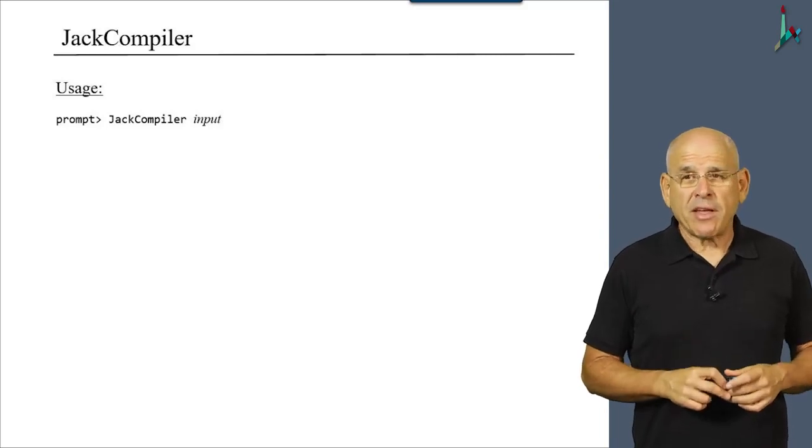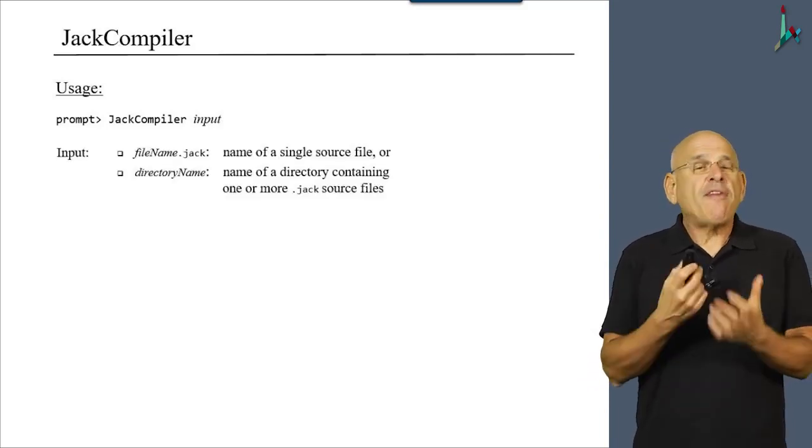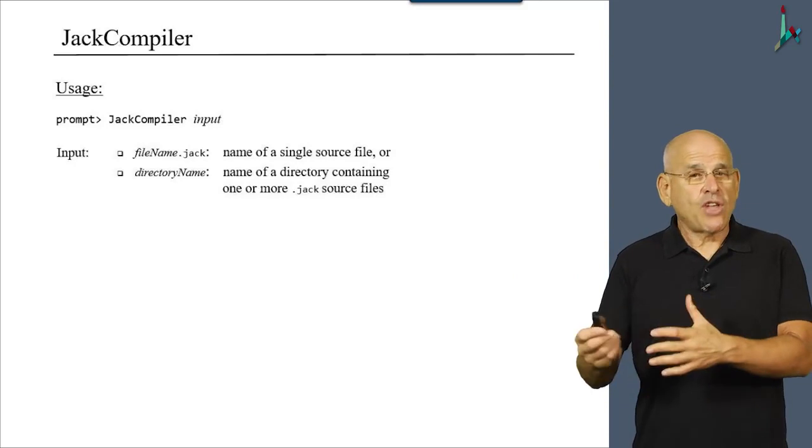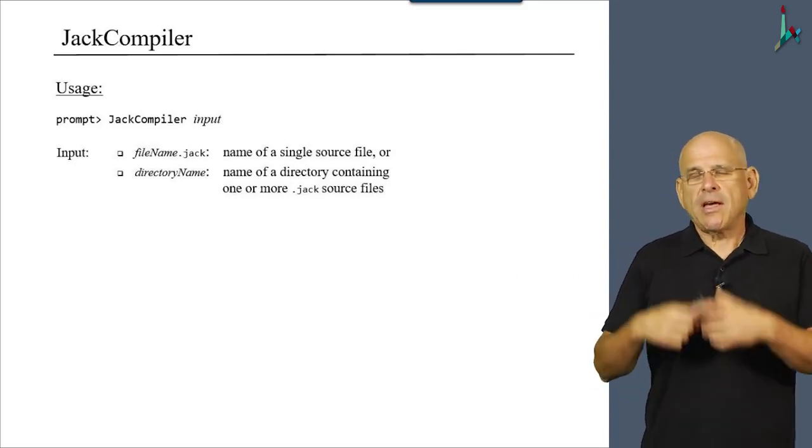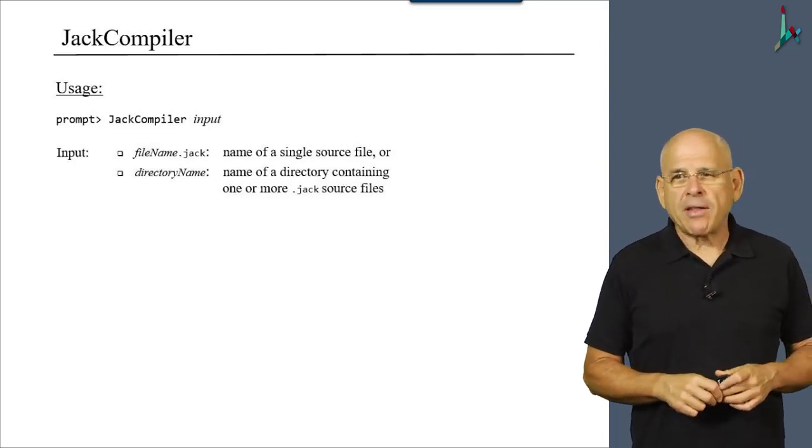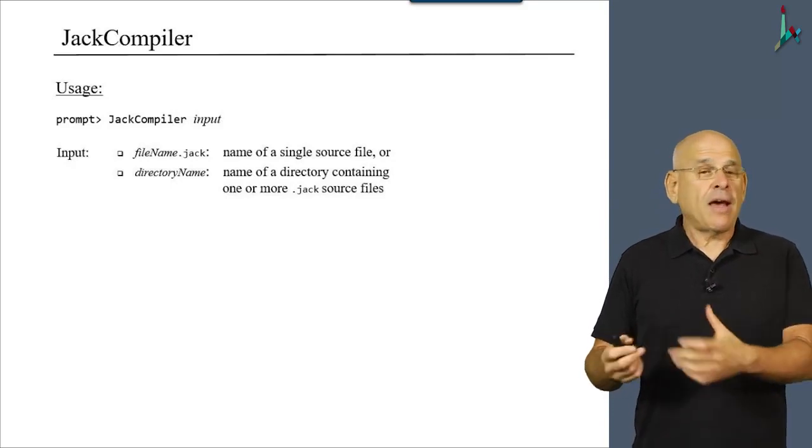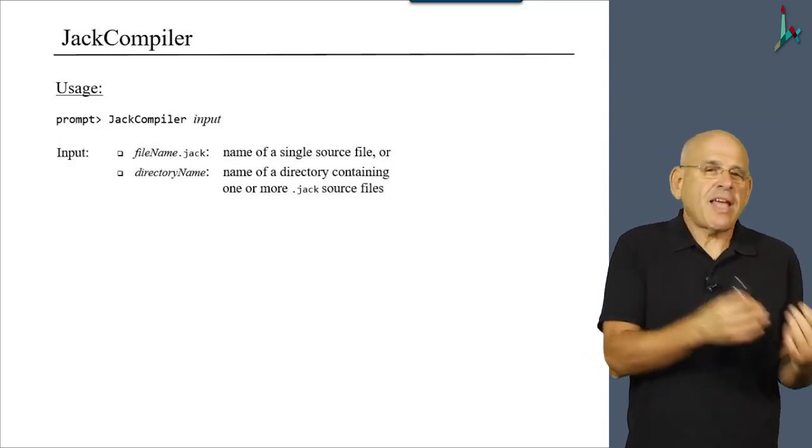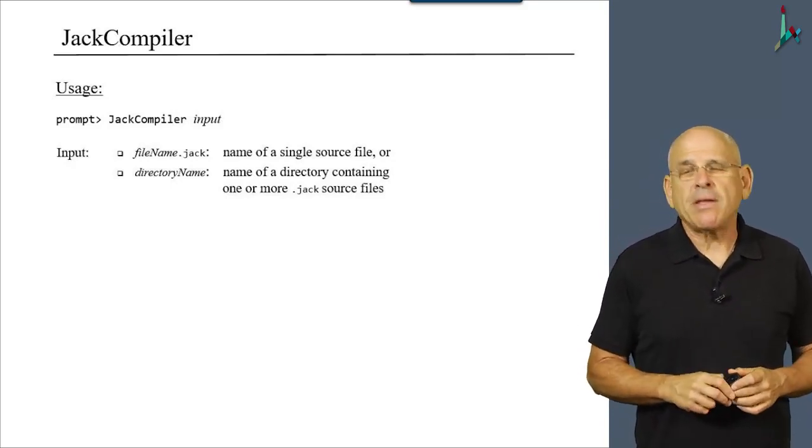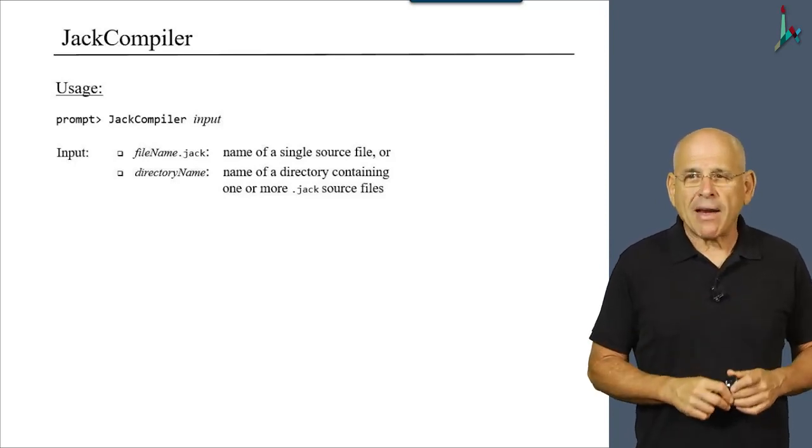And this input can be one of two things. It can be either a file name .jack, in which case the compiler will generate from it another file with the same name but with a VM extension. This is the output of the compiler.